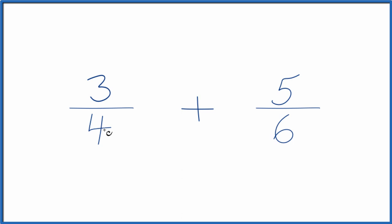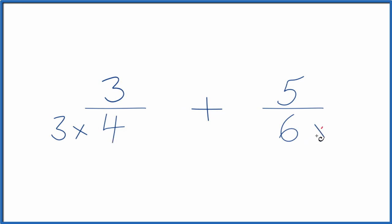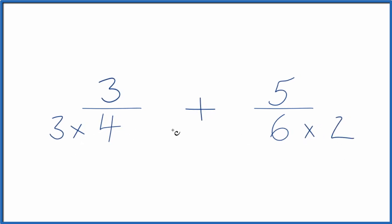I know that 4 goes into 12 and 6 goes into 12, so I could say 3 times 4, that would give me 12. 6 times 2, that would give me 12. So now I have the same denominator.